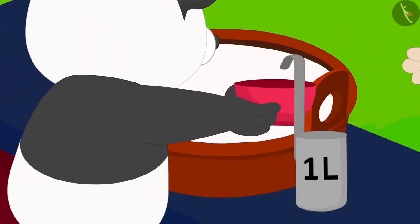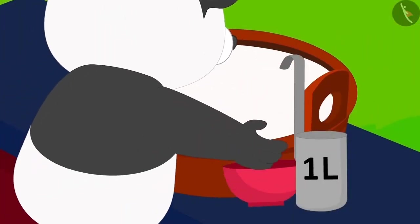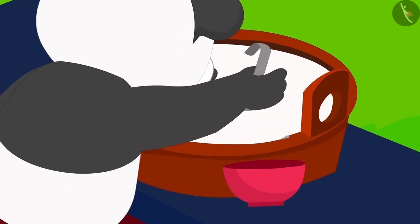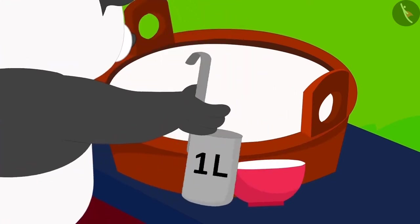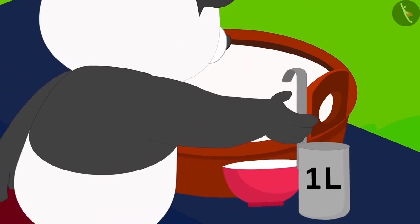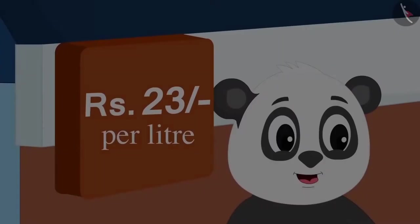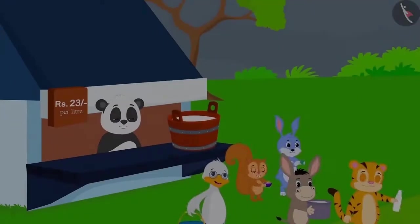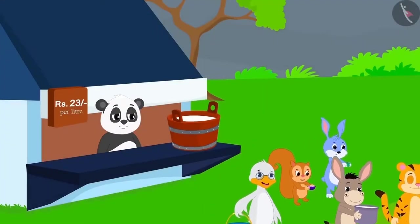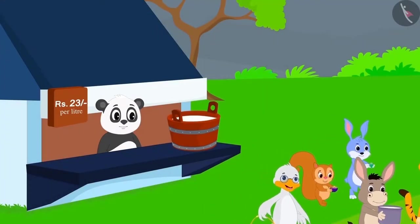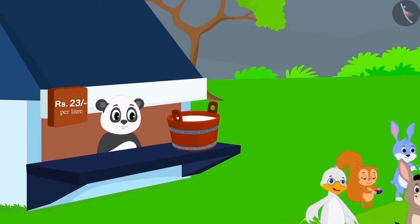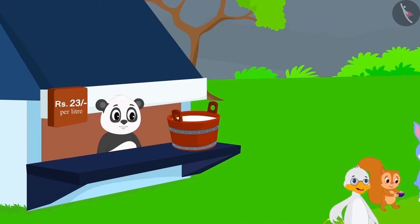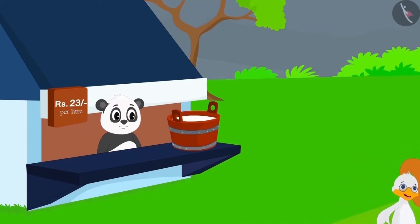Now, Golu started selling milk using this measuring scale and took money from everybody according to the amount of milk per litre. Golu sold milk to all the villagers and everyone happily went back to their respective homes.